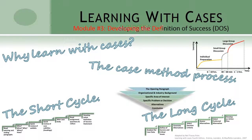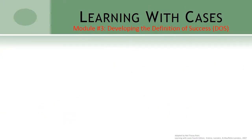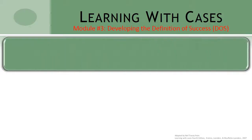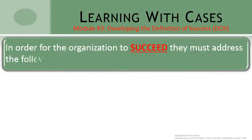In this module, we're going to take a closer look at developing our definition of success. The definition of success is a key element in the case process. If we don't properly define the outcome we are trying to achieve, we will not be effective in solving the case. When stating our definition of success, we use a standard format. We start off by stating, 'in order for the organization to succeed,' and we conclude by indicating they must address the following critical issues.